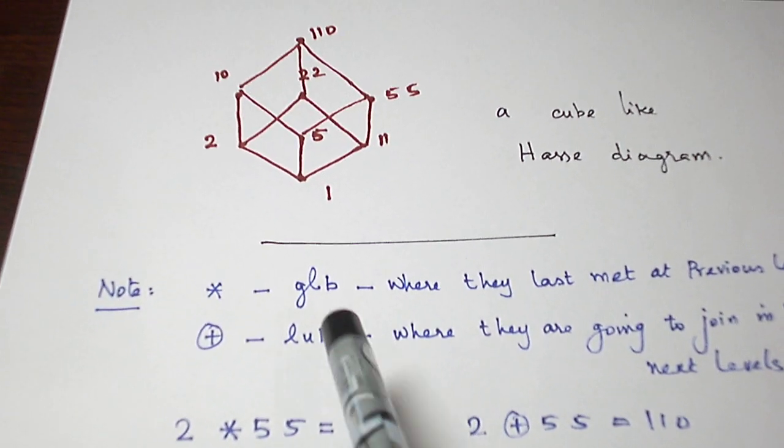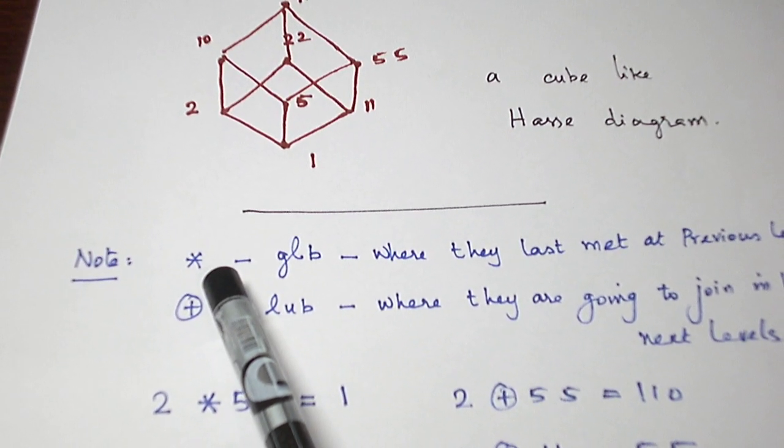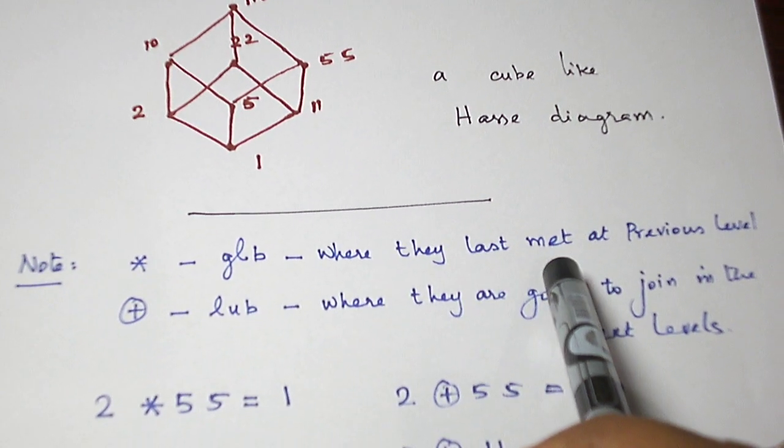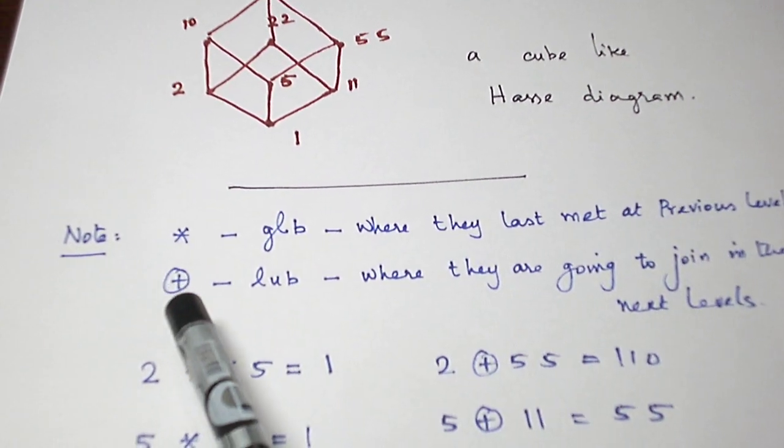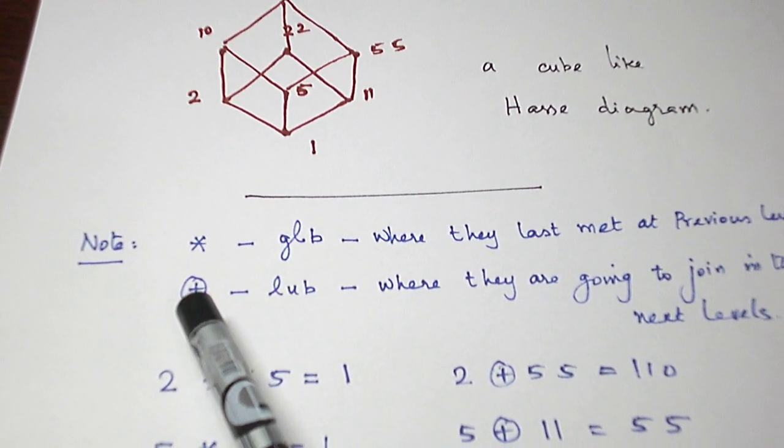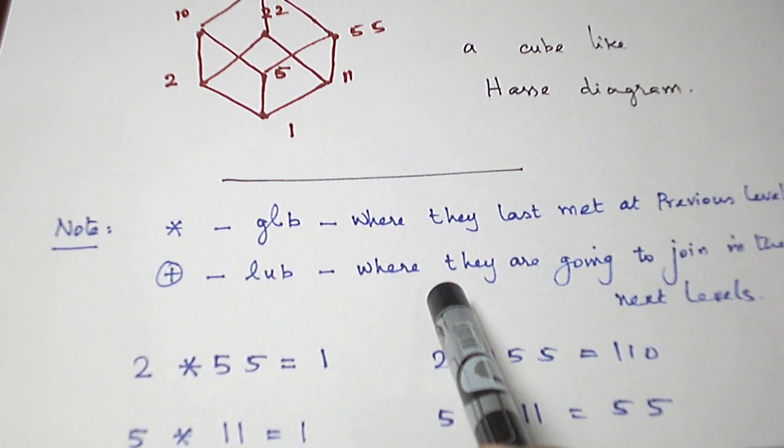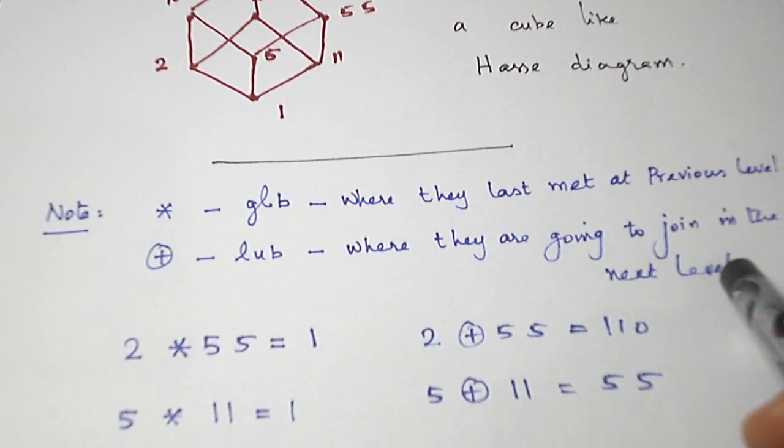And, an additional information I want to give. The star element, the meet element, is the GLB. That is where the elements last met at the previous level. The join element, join operation plus, is the least upper bound LUB of the two elements. That is, where the two elements are going to join in the next level.